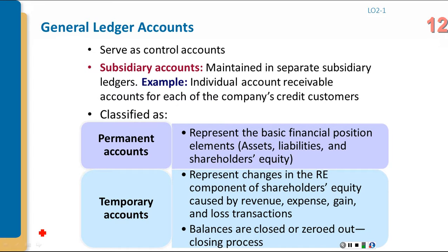Permanent accounts are your assets, liabilities, and equity accounts — they are not closed out. Temporary accounts represent changes in retained earnings and include revenue, expense, gain, loss, and dividend accounts. Their balances are zeroed out during the closing process at the end of the period. We do not intentionally close permanent accounts, although they may occasionally have a zero balance. With temporary accounts, we do close them.